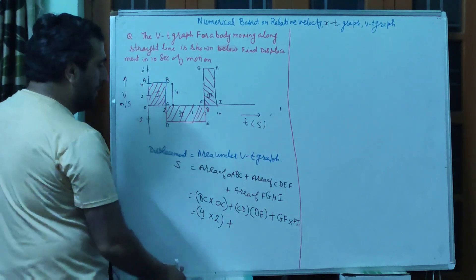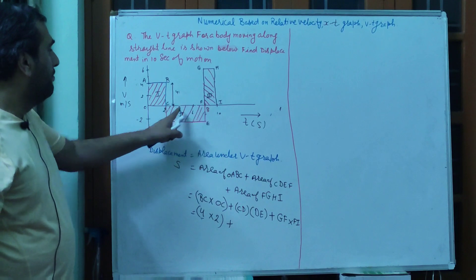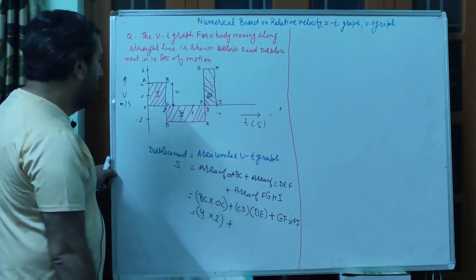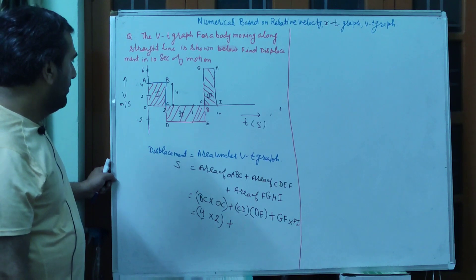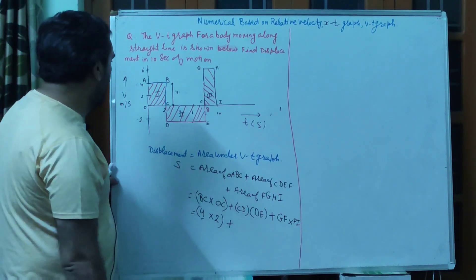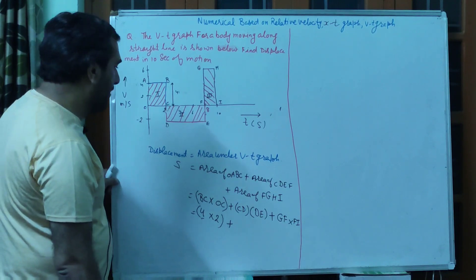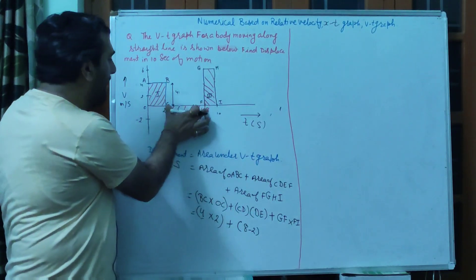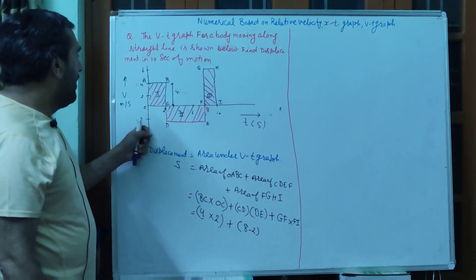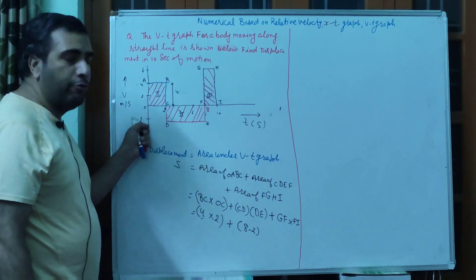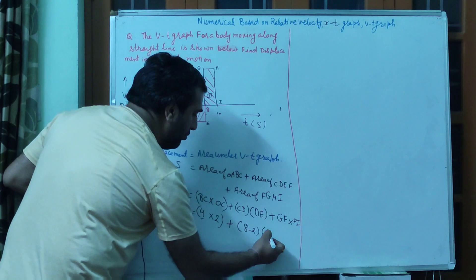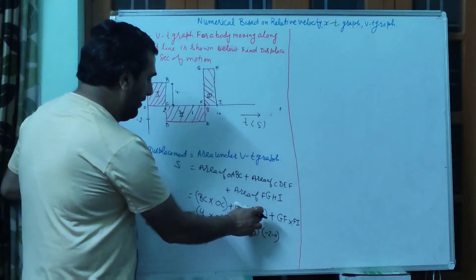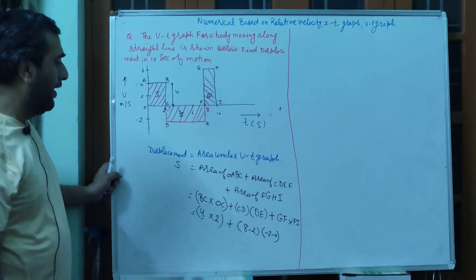Plus 3rd region का area देखोगे तो 8 minus 2, क्योंकि final coordinate 8 है, initial coordinate 2 है। CD into DE की value है 8 minus 2। यहाँ पर जो final coordinate है वो minus में है, तो minus 2 minus 0। CD की जो value आएगी, that is 2 minus 0।